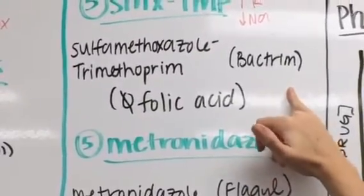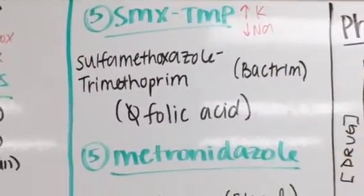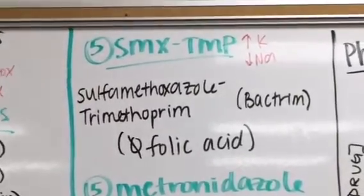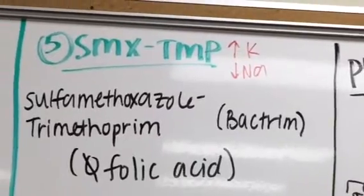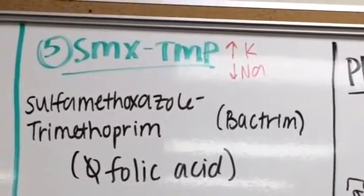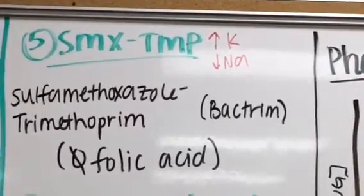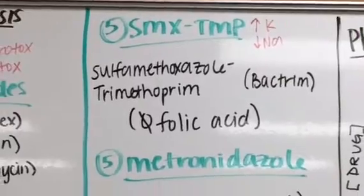The brand name is commonly just referred to as Bactrim. Two electrolytes that we really focus on with Bactrim are going to be hyperkalemia or increased potassium, and hyponatremia or low sodium levels. That can be something to be seen with patients that are on Bactrim as well.